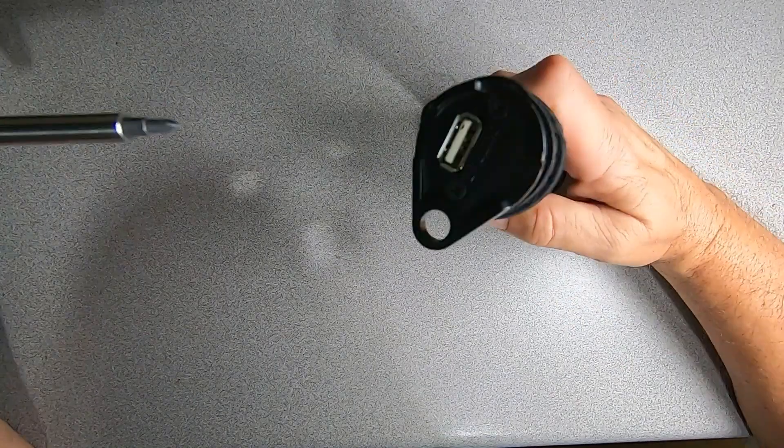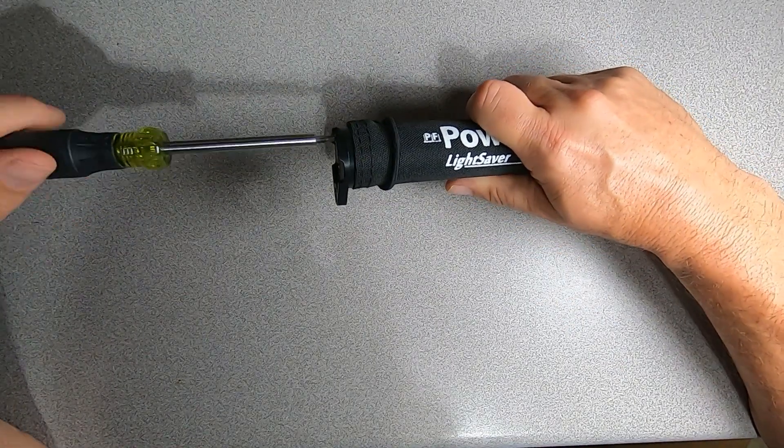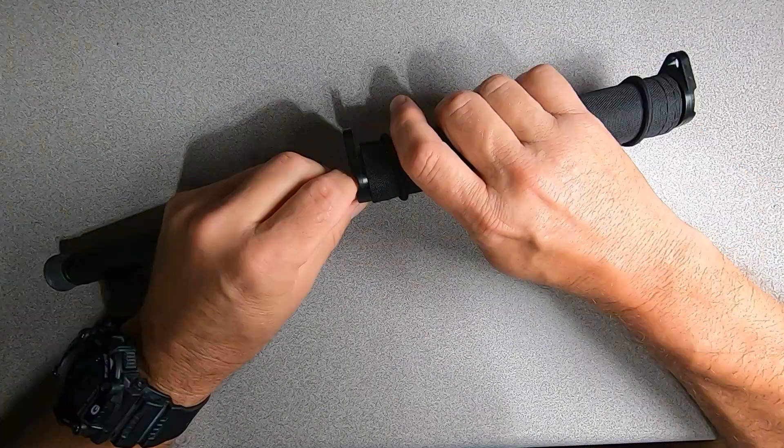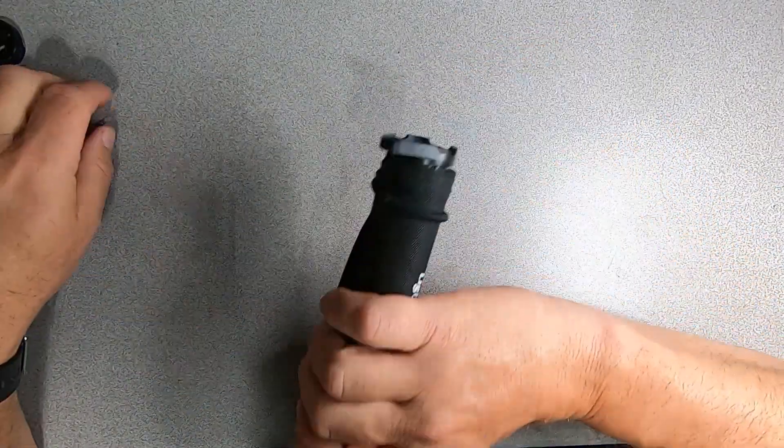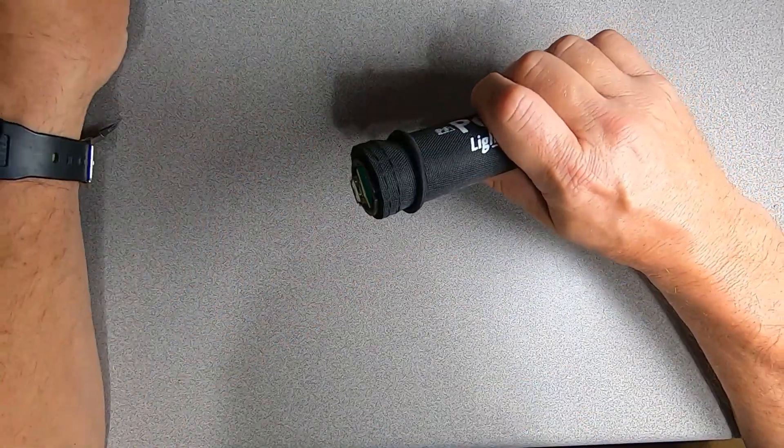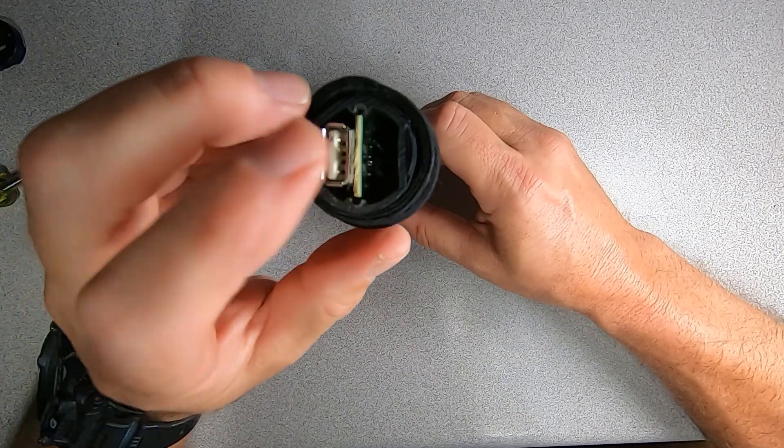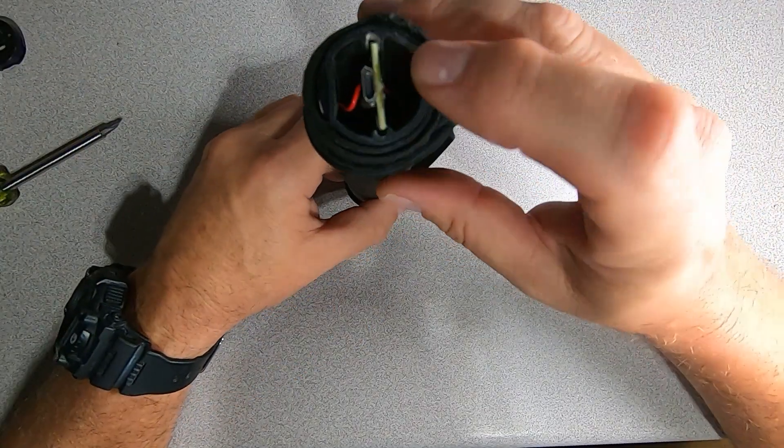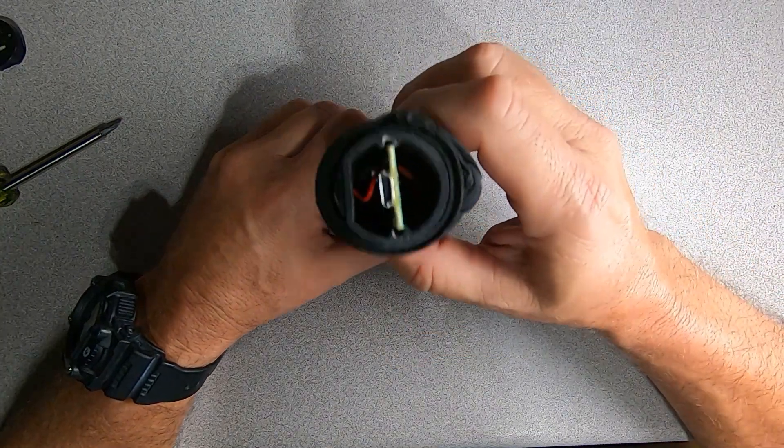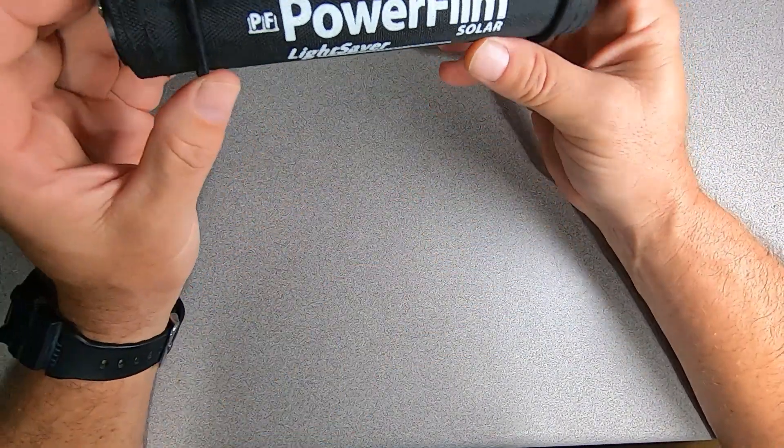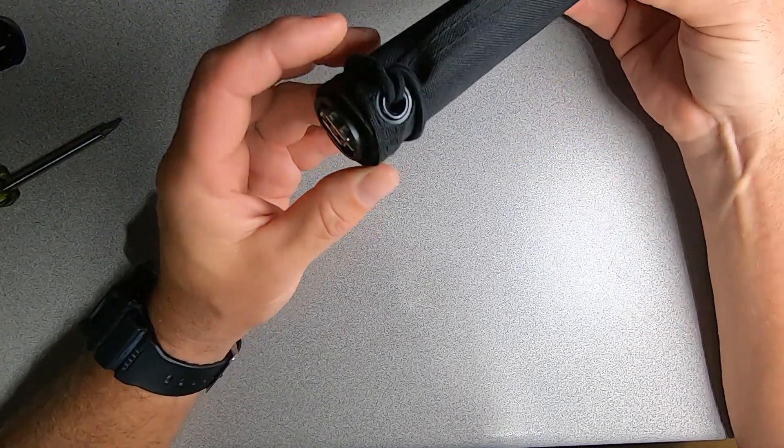At either end of the device, there are two screws, so there's four total. Now we can see our circuit board inside of here. And if you look inside there, you can see the cell located in there. Now this thing is tied to the solar panel itself, so we have to detach it from the solar panel.